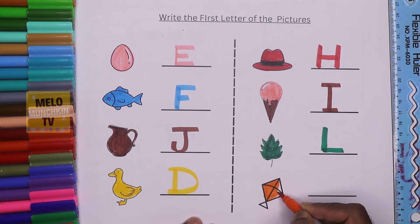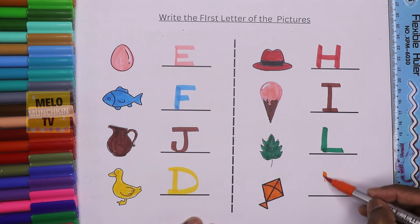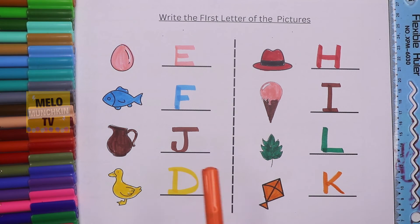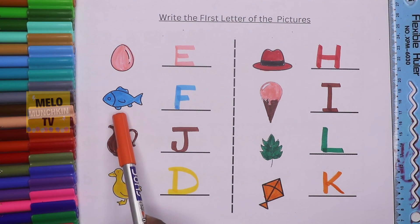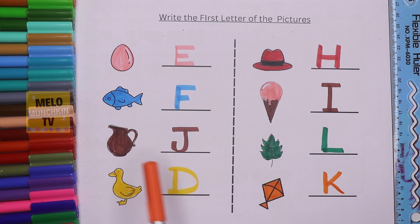kite. Kite starts with the letter K. K for kite, so I'll write K. K for kite. We have completed this, so let's revise it once again: E for egg, F for fish, J for jug, D for duck, H for hat, I for ice cream, L for leaf, K for kite.